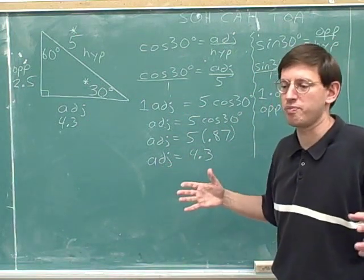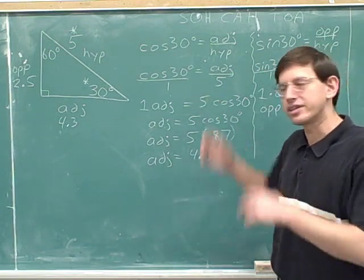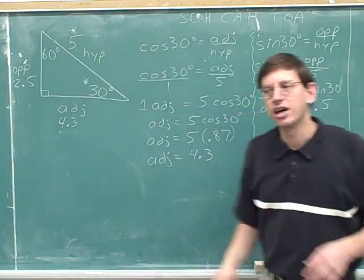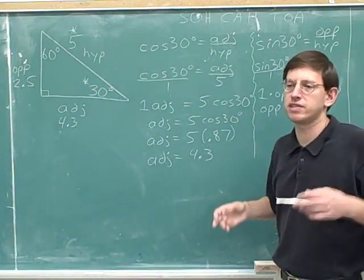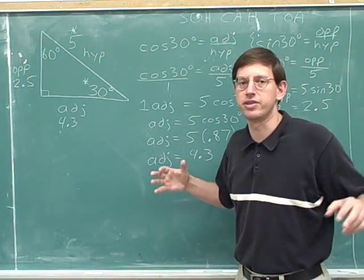So now you can start to see why people learned about trigonometry in the first place. Because it lets you figure stuff out. Even if you're only given one side and one angle of a right triangle, once you know trigonometry, you can use that to figure out everything else about the triangle. You can figure out all the other sides and all the other angles.